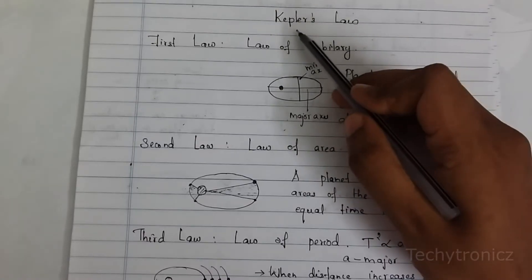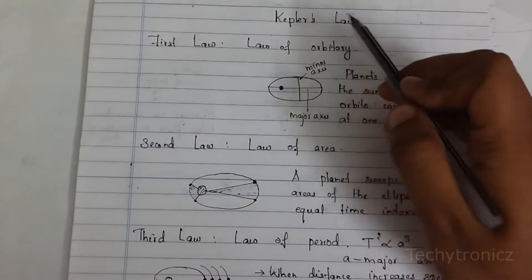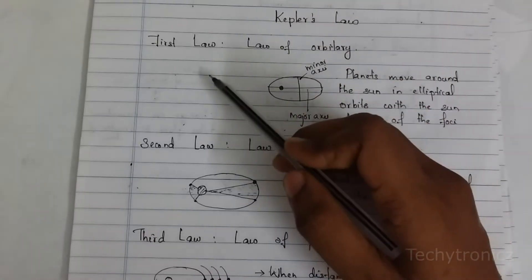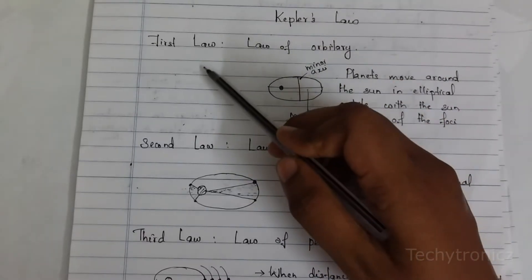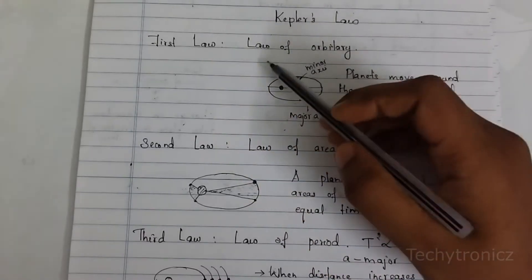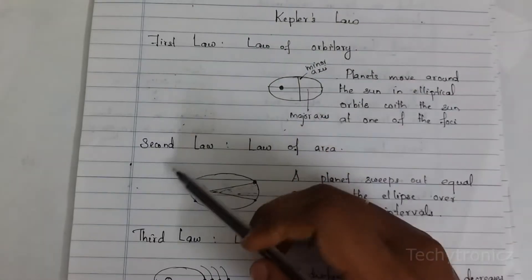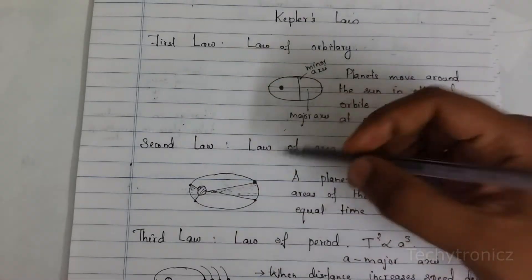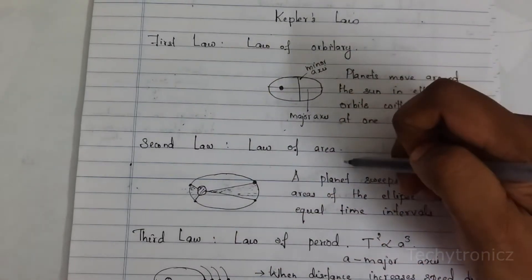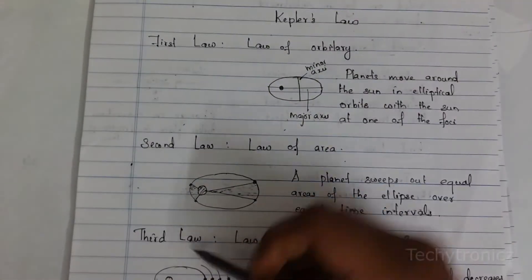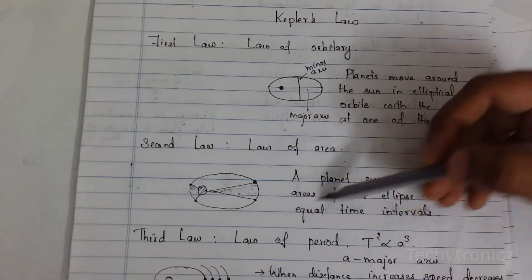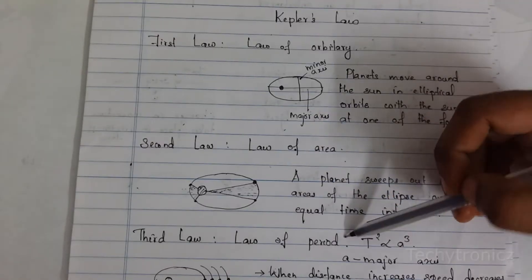When we go for Kepler's law, we are having three laws. The first law is the law of orbits, the second law is the law of area, and the third law is the law of period.